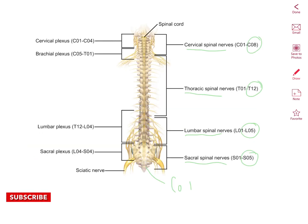When nerves come together in a body region they form a plexus that innervates a specific region of the body. We have the cervical plexus from C1 to C4, the brachial plexus from C5 to T1, the lumbar plexus from T12 to L4, and the sacral plexus from L4 to S4.